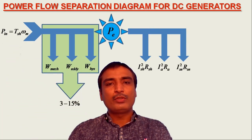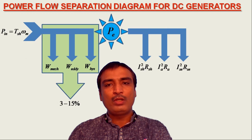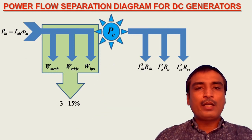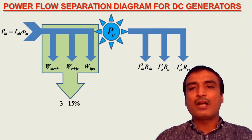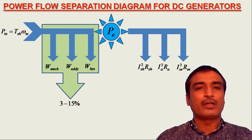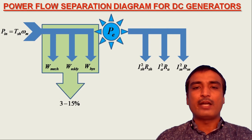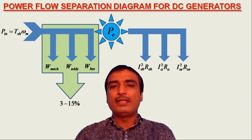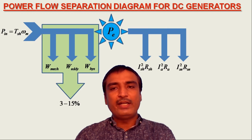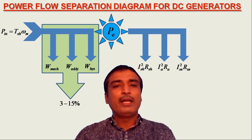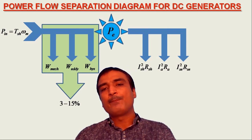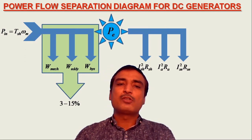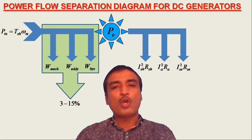One may ask about the copper losses in interpole and compensating windings of the DC generator. The interpole and compensating windings are connected in series with the armature and thus carry full armature current. So the copper losses in interpole and compensating windings must be included in the armature circuit copper losses. Likewise, power losses due to brushes may also be added in the armature circuit copper losses.